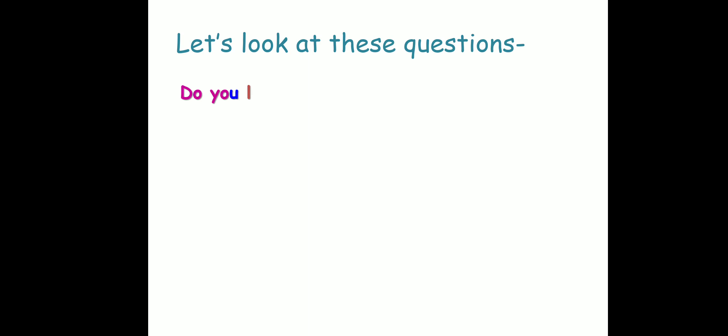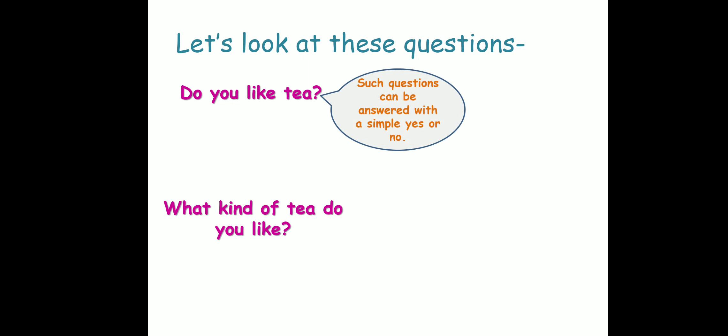Let's look at these questions. I'm going to explain the first part of the chapter through two questions. These are two very easy questions but I'll make you understand the difference. The first question is: Do you like tea? This is a very simple question — do you like it or you don't? The next one is: What kind of tea do you like? That is a level up from the previous one. Now, for the first one, such questions can be answered with a simple yes or a simple no — either yes I like tea, or no I don't like tea.